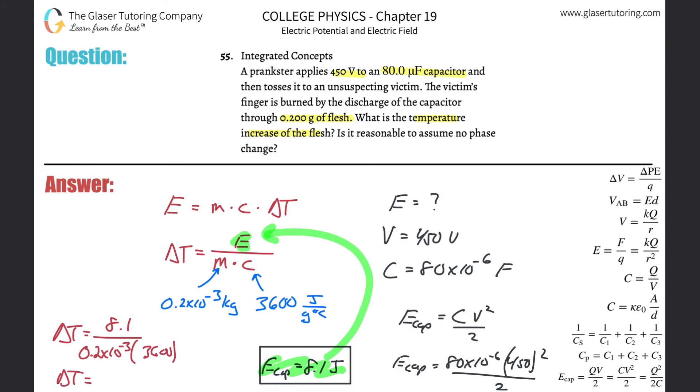And what do we get? So let's see. 8.1 divided by parenthesis, 0.2 times 10 to the minus 3, times then 3600. And we get about 11.25. I guess about 11.3 then. And that's in terms of degree Celsius. You can also call it degree Kelvin. It doesn't matter. But this is basically the amount of the temperature change.